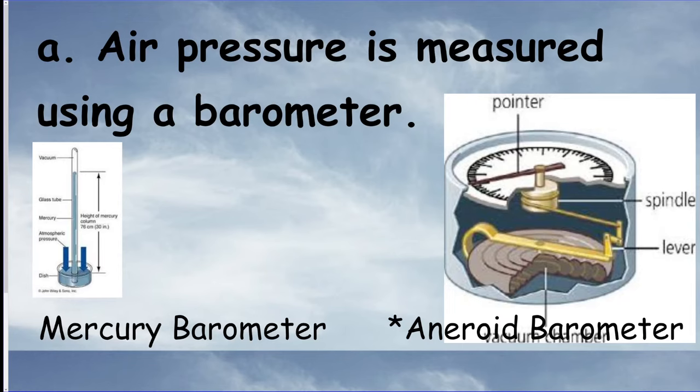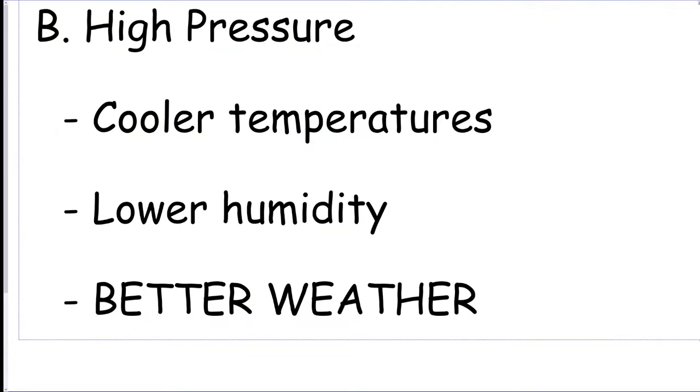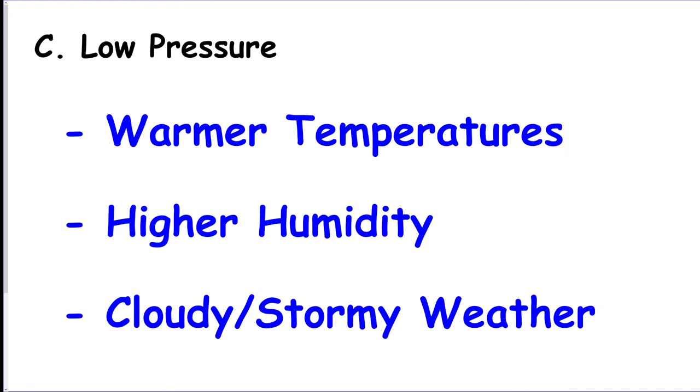Now to measure air pressure, we use what we call a barometer. And this is going to be measuring air pressure in a unit of millibars. Generally, the higher the pressure goes on the barometer, the cooler the temperatures, the lower the humidity outside, and the better the weather. So we call the weather fair. That would mean not cloudy. So clear skies, no rain. If it's low pressure on the barometer, that means it's probably warmer temperatures with a lot of humidity. Humidity means a lot of water in the air. And that's going to bring a lot of clouds and storms.